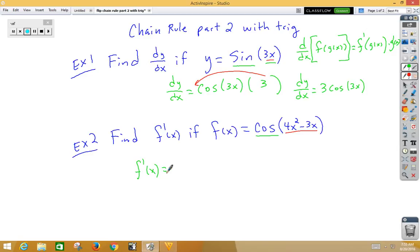derivative of cosine is negative sine. Don't change the inside function. Multiply by the derivative of the inside function, which would be 8x minus 3.